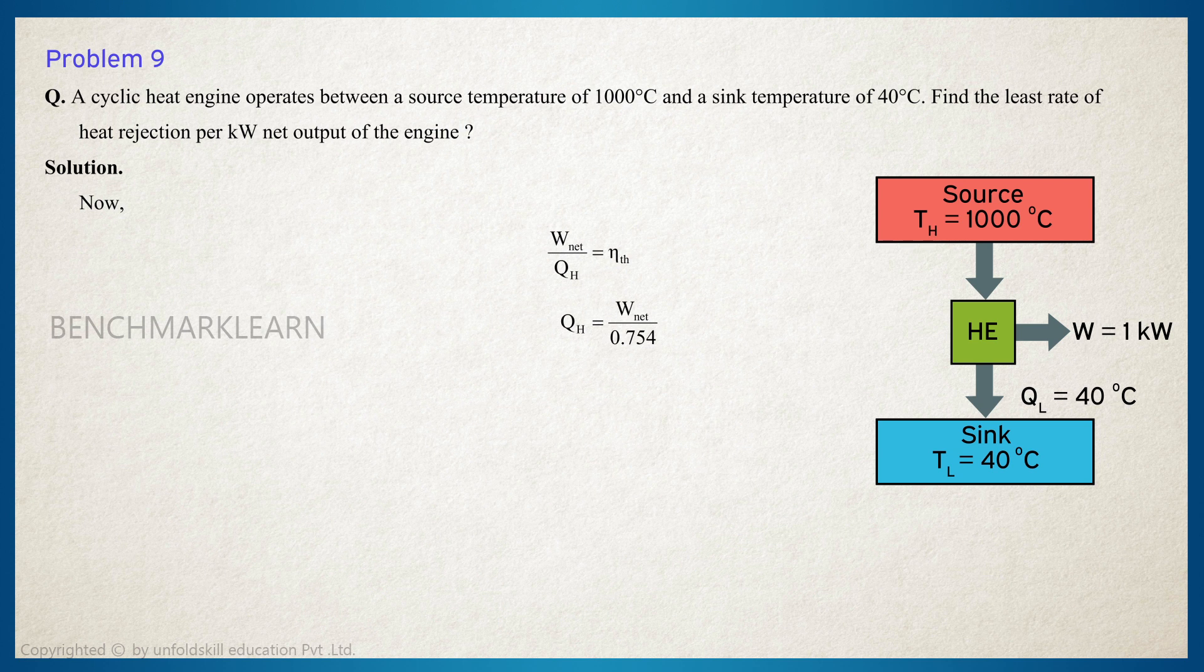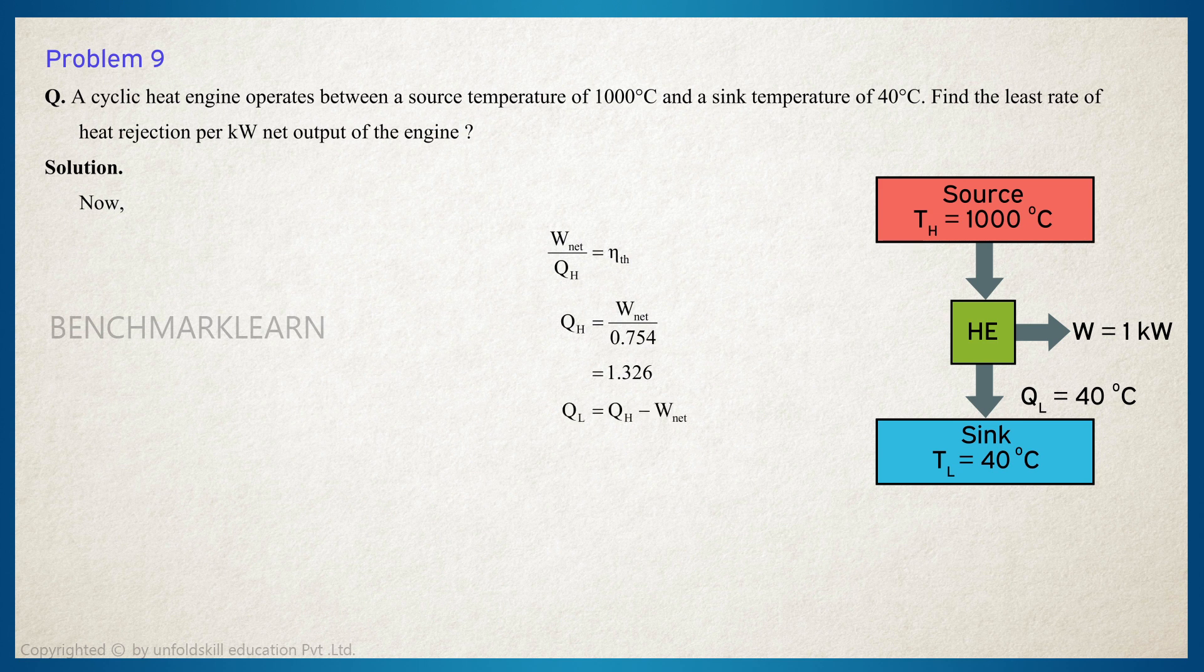Now, QL is equal to QH minus W net, that is 1.326 minus 1, which is equal to 0.326 kilowatt.